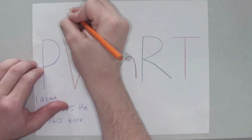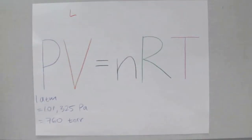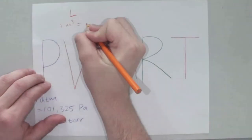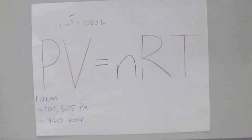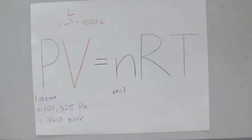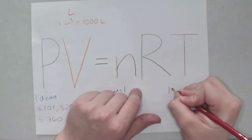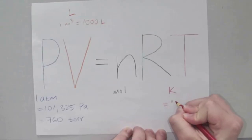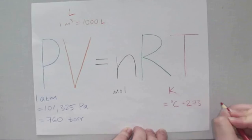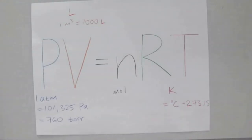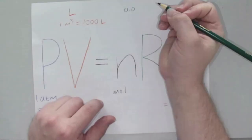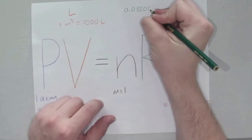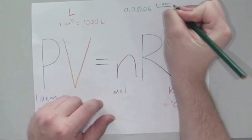Volume is usually going to be in liters (L). Another common unit is cubic meters, which equals 1,000 liters. Moles are pretty self-explanatory — just in terms of the mole. Temperature is in Kelvin (K), which is an absolute temperature scale, meaning at zero Kelvin there is no energy present. To get Kelvin, take degrees Celsius and add 273 (or 273.15 if you're feeling ambitious). And R, the gas constant, is usually 0.08206 liter·atmospheres per mole·Kelvin.